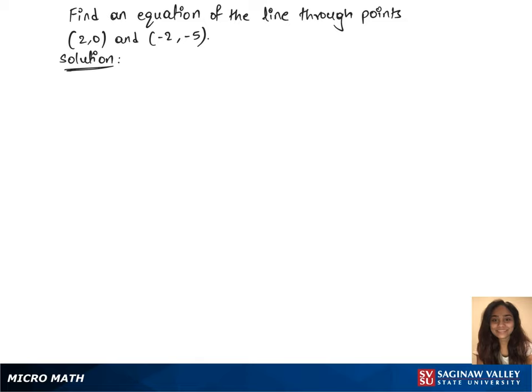To find an equation of the line through the given points (2,0) and (-2,-5), we'll first need to know the slope. So we'll use the formula m equals y2 minus y1 over x2 minus x1.